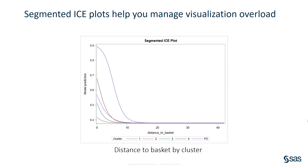There are two things to look for in ICE plots: intersecting slopes, which indicate interactions between the plot variable and one or more other model variables, and level differences, which indicate group effects. The slopes of the various cluster centroids are nearly parallel, indicating a lack of interaction between distance to basket and the other model variables. But notice the dark blue line, cluster 1 — it indicates a marked advantage for certain types of shots compared to other shots taken at the same distance to basket. It turns out that this cluster includes a disproportionate number of dunk shots taken in the restricted area of the court, and these shots had an extremely high success rate of 84.6%.